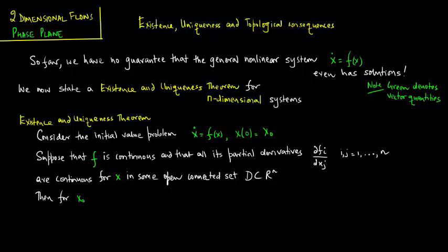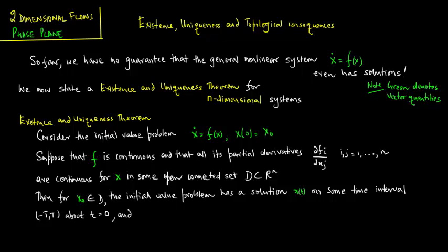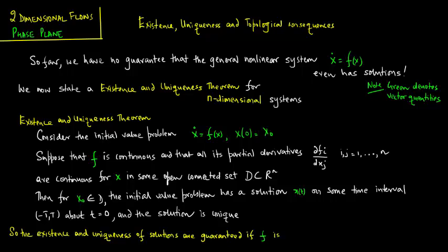Then for x not an element of D, the initial value problem has a solution x of t on some time interval minus t to capital T about t equals 0, and the solution is unique. So the existence and uniqueness of solutions are guaranteed if f is continuously differentiable.